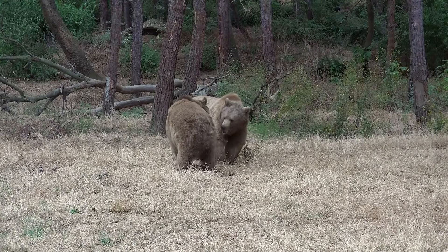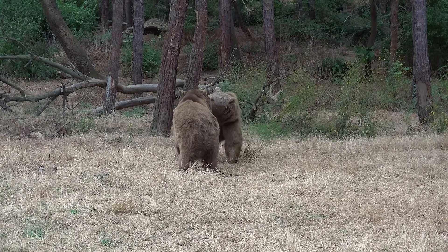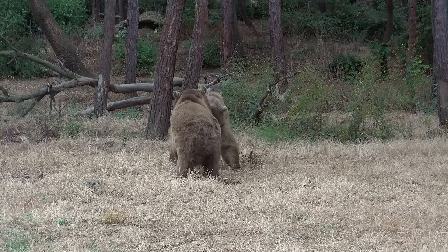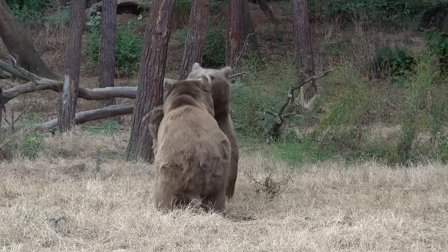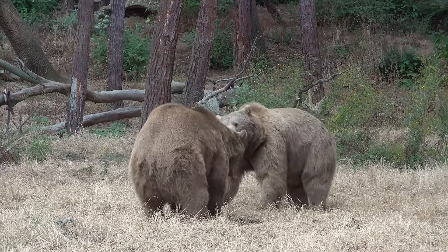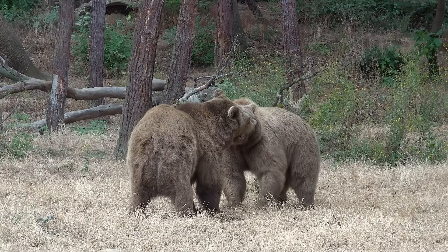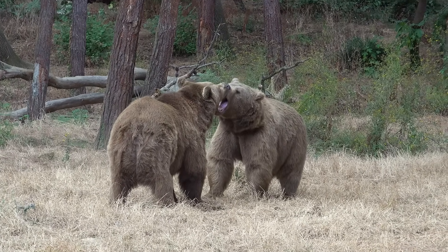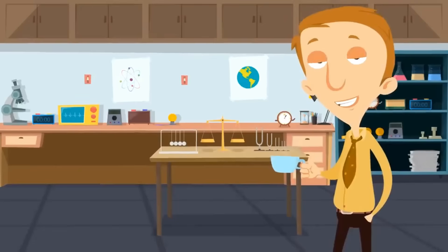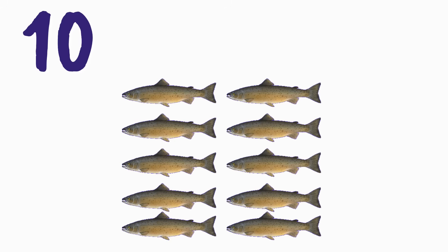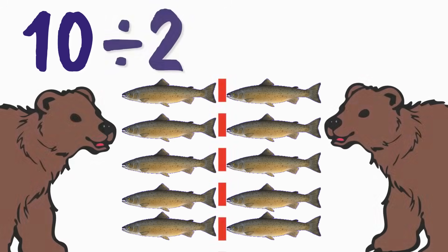Look at these two bears. These two bears are going to share some fish — they're going to evenly divide some fish. You both are friends; you both need to share these fish evenly. We're going to divide them up. So there are a total of ten fish, and we are dividing the ten fish into two groups — one for each bear. Ten divided by two.